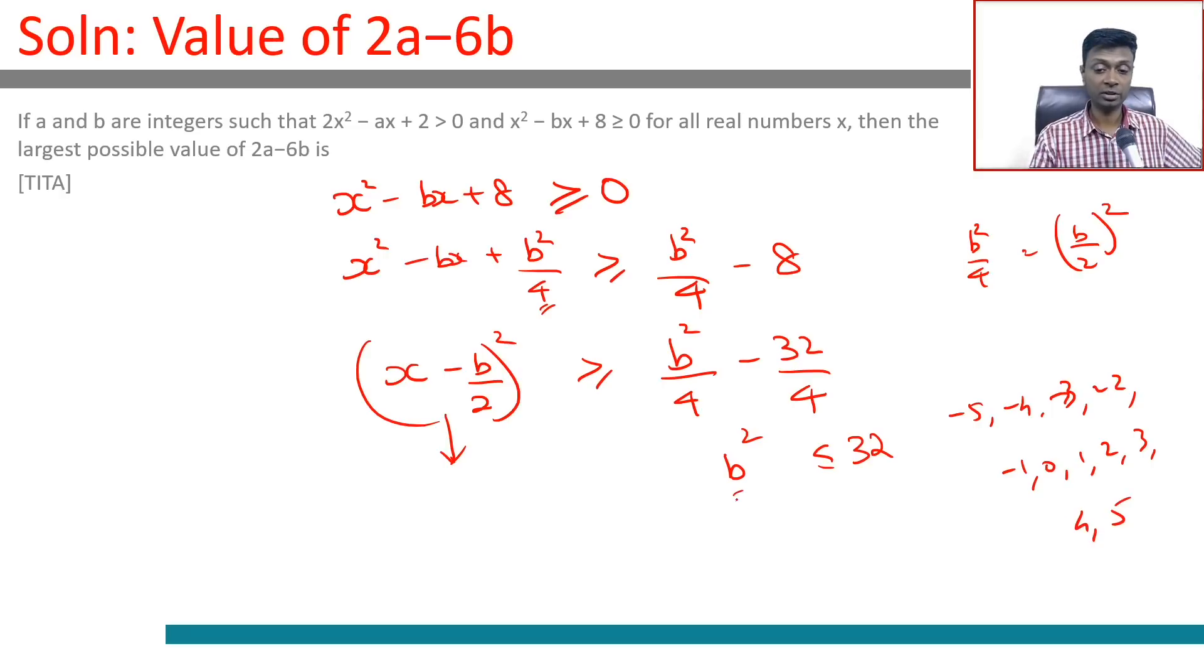That means b can go from -5 to 5. But if it is greater than 5, it will become 36 minimum. If it is less than -5, it will be minimum of 36 again.